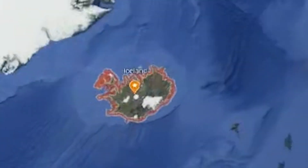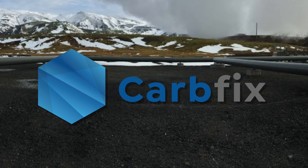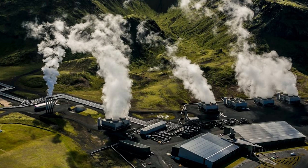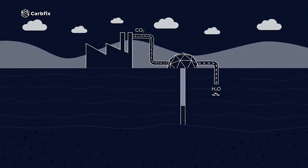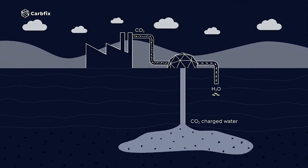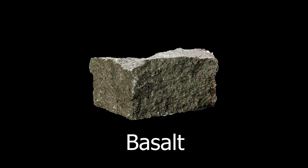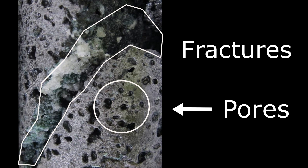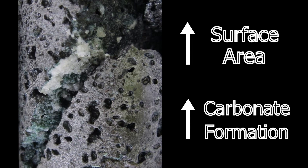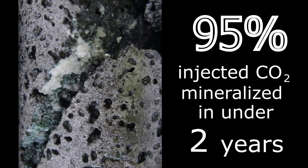A recent project in Iceland called CarbFix is advancing this process inland. Initially, over 200 tons of carbon dioxide was collected from a nearby power plant, dissolved in water, and then injected underground into a site of basalt. Basalt is a common volcanic rock which contains olivine and plagioclase, minerals shown to be especially reactive with carbon dioxide. The pores and fractures of basalt at this depth underground provide additional surface area for minerals to react with carbon dioxide and precipitate carbonates. Up to 95 percent of the injected carbon dioxide mineralized in under two years.